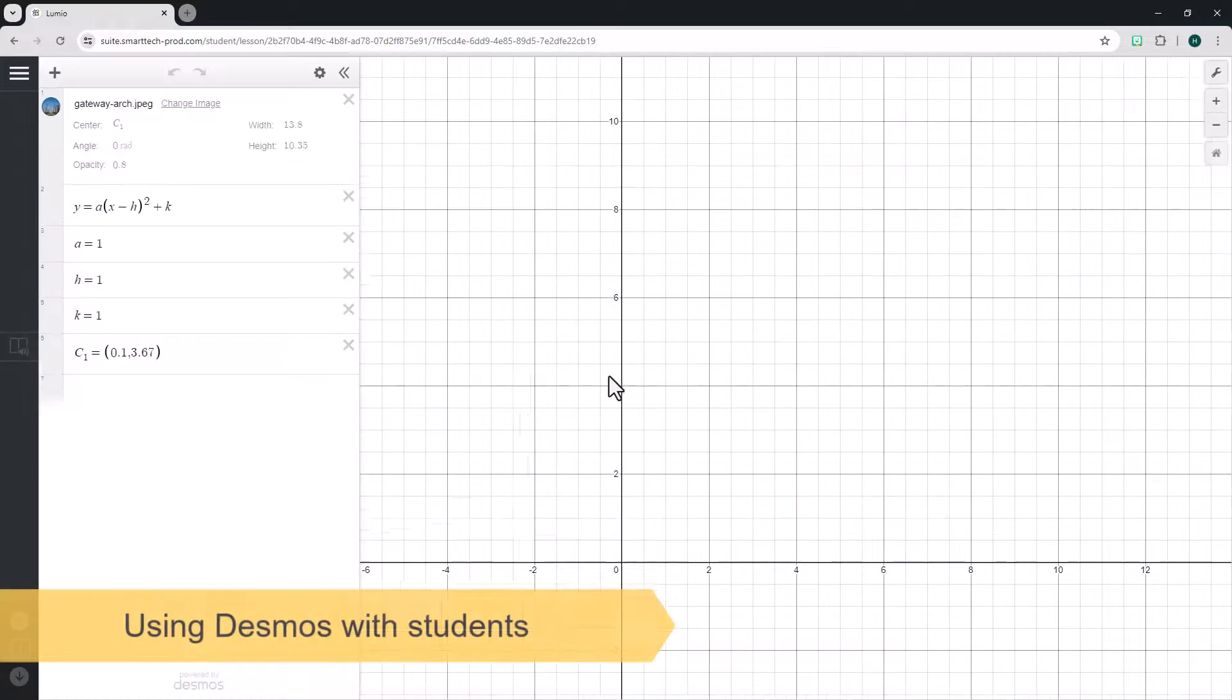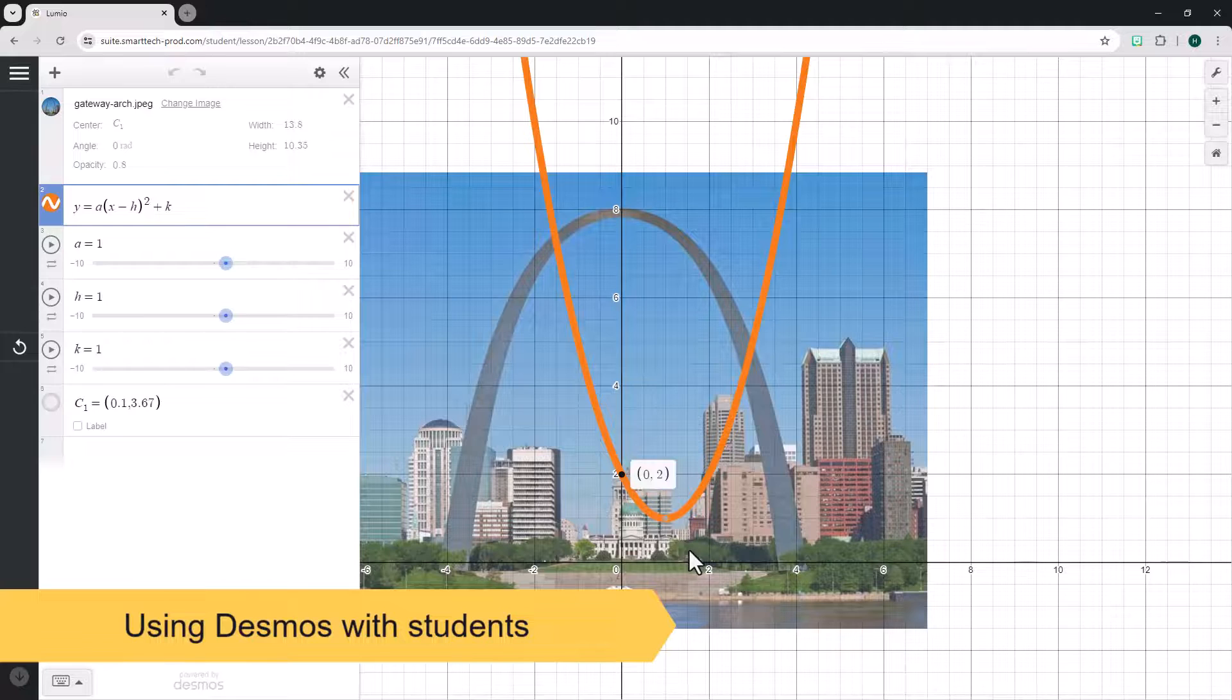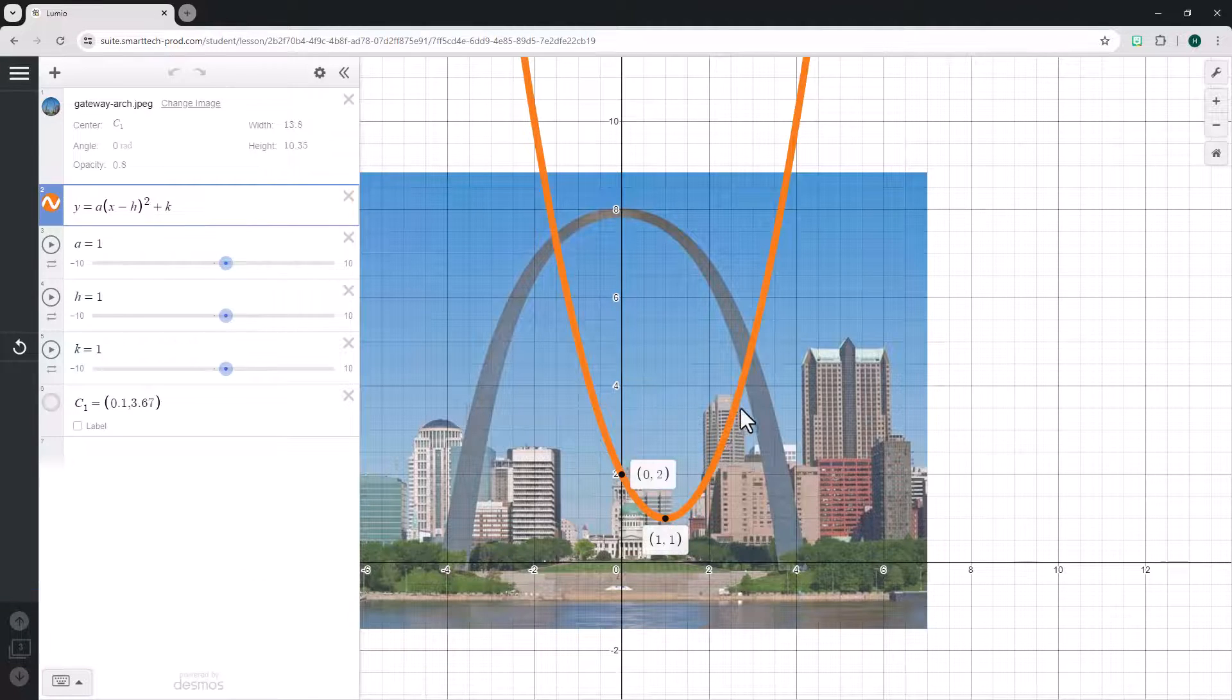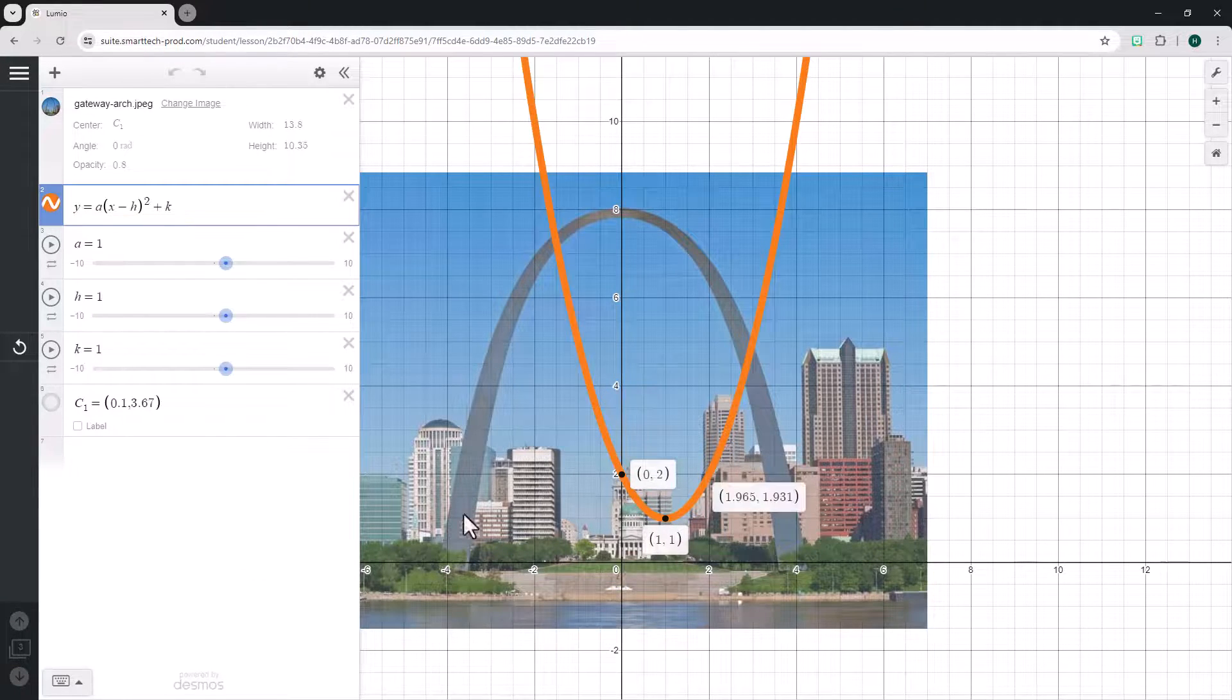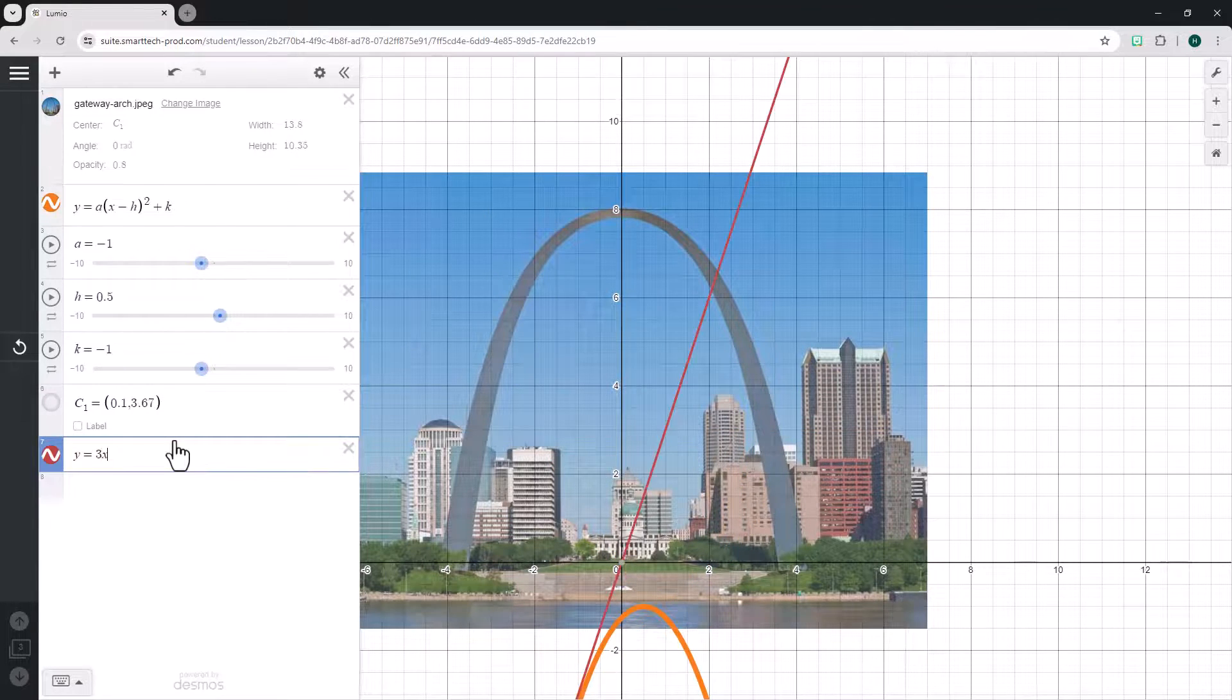In delivery mode, the Desmos graph is interactive on both student and teacher devices. Students can select a point on the graph to display the coordinates or add additional data, tables, or expressions to make their own representations.